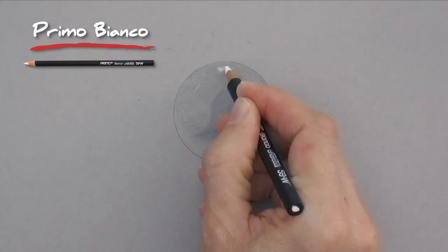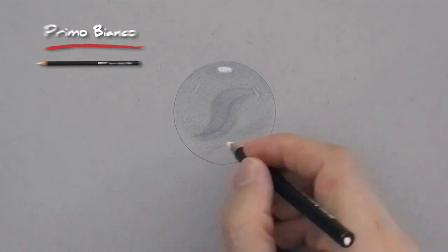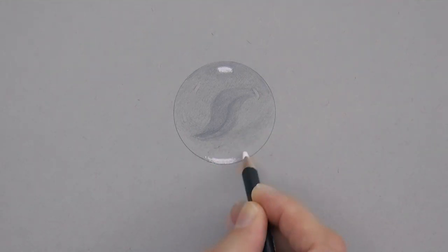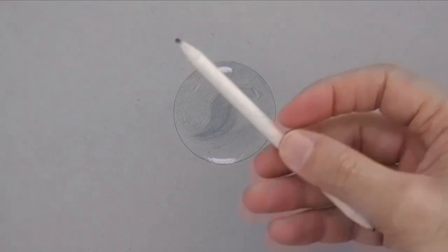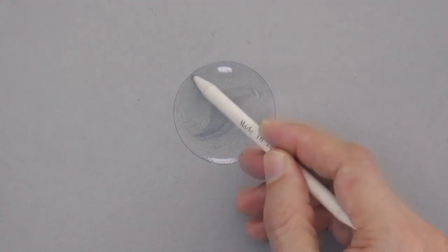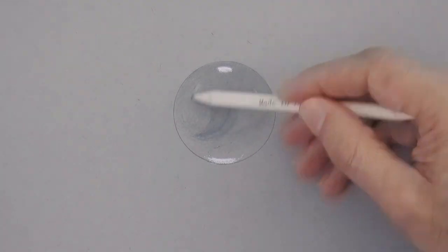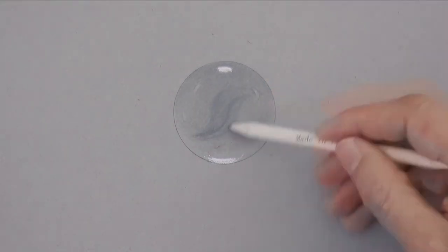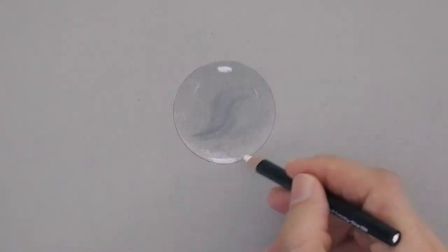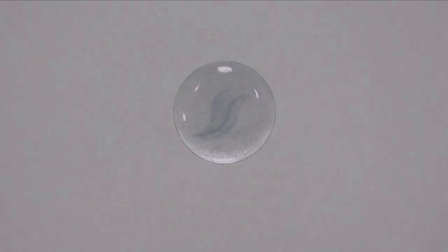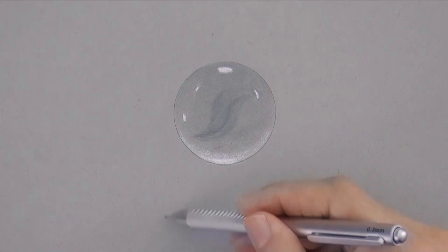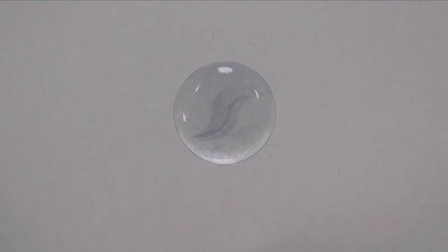With a white pencil we draw the top reflection and the lower area which I will finish in a little bit. With a stump we can soften and make more even the shading. This lower area as we know gets illuminated but maybe a little bit less intensely than the top bright spot.